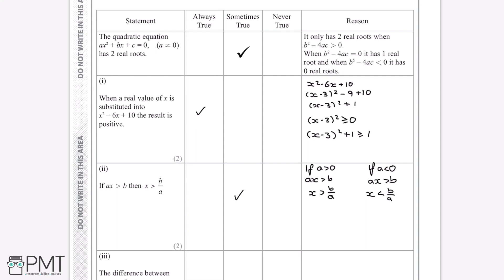And this would give us both marks, because we've stated that it's only sometimes true for the answer mark. And for the method mark, we've shown why, we've shown a case where it may not always be true, which is when a is negative.